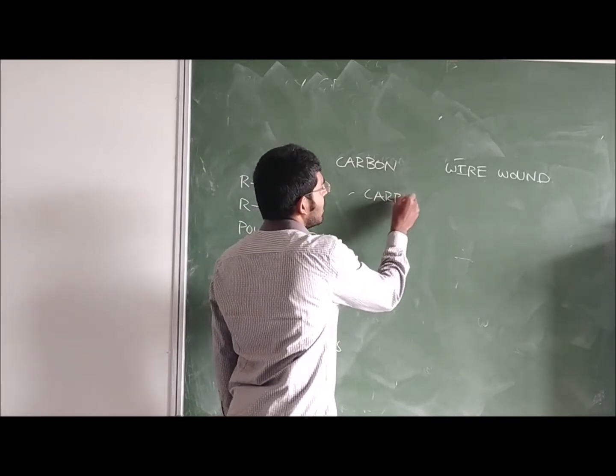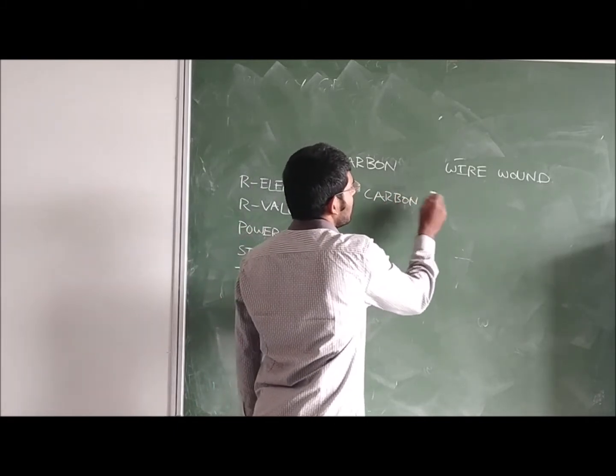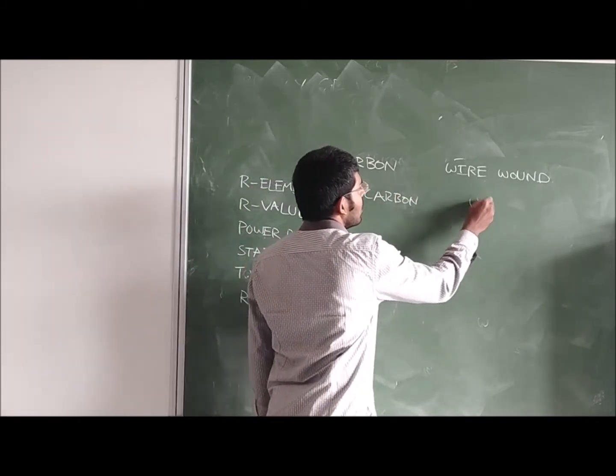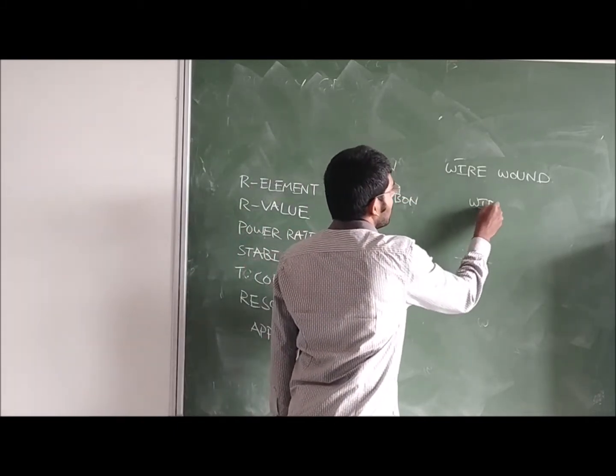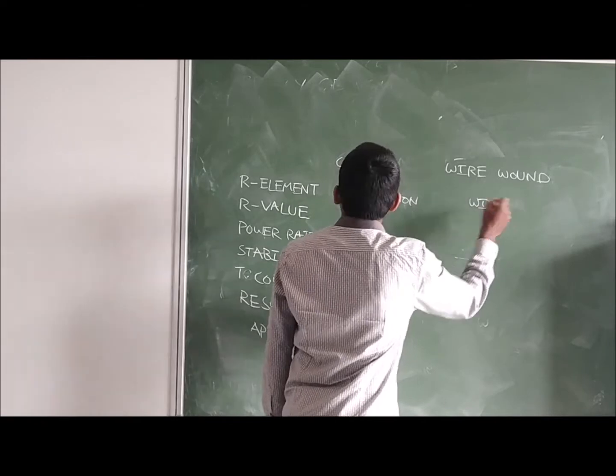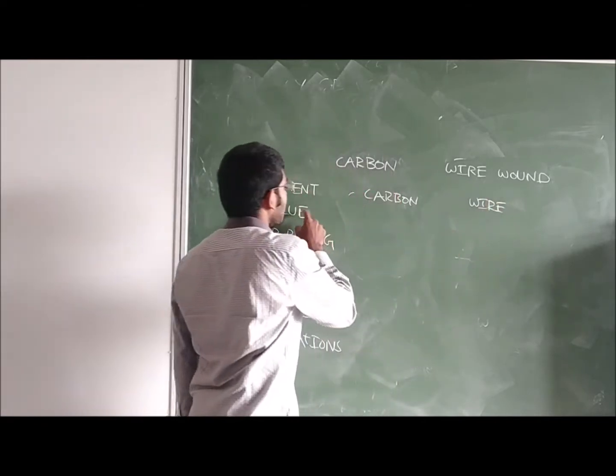The resistive element in the carbon potentiometer is carbon. The resistive element in the wire wound potentiometer is wire.